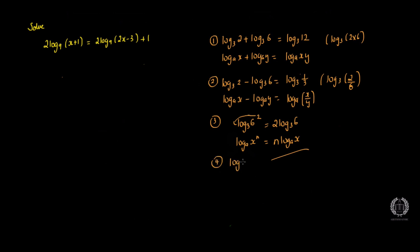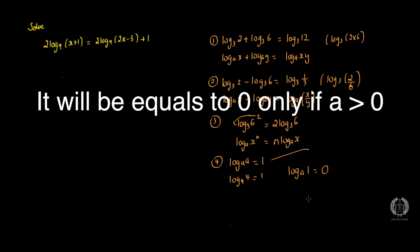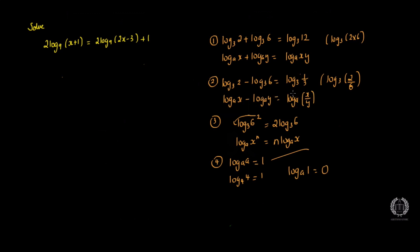There are also a couple of other rules. Say you have log_a(a) — anything where the argument equals the base gives you 1. So log₄4 = 1, log₅5 = 1, log₆6 = 1. And if you have log_a(1), that gives you 0. Remember: rules one and two for multiplication and division only work if the bases are the same — if the bases are different, you cannot apply them.